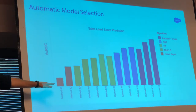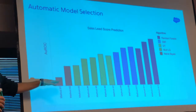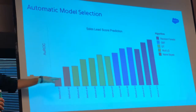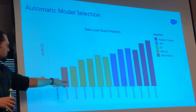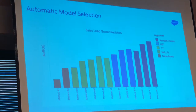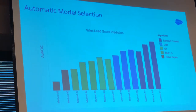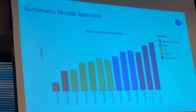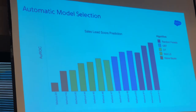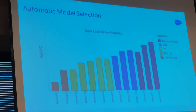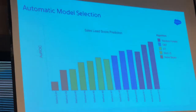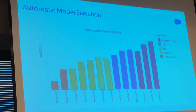When you do just logistic regression, you can try a couple of parameters or maybe some more. But if you try multiple families of algorithms, your models can improve significantly. This is transparent to the users.